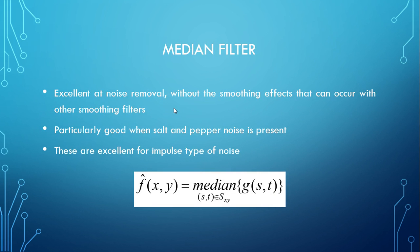The median filter is excellent at noise removal without the smoothing effects that can occur with other smoothing filters like the Gaussian filter. It is particularly good when salt and pepper noise is present, and excellent for impulse-type noises. The formula for the median filter is shown on screen.